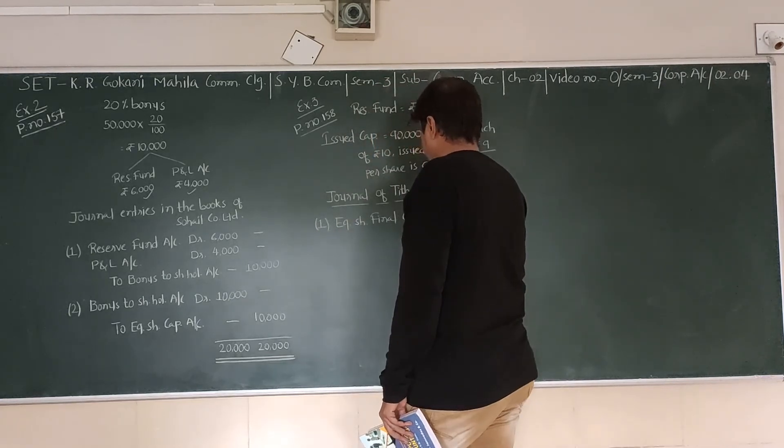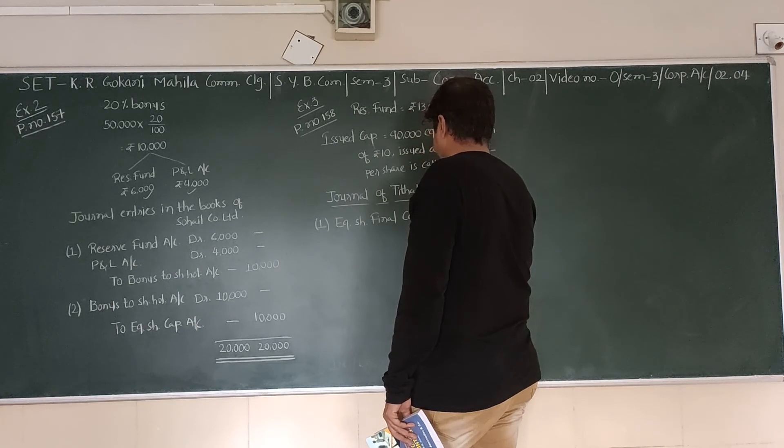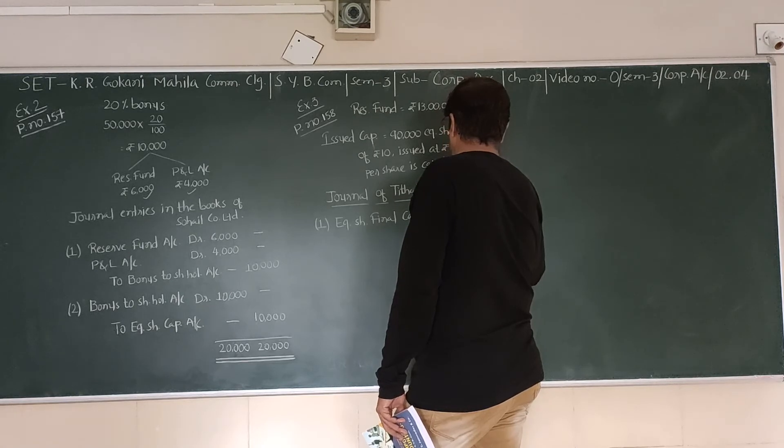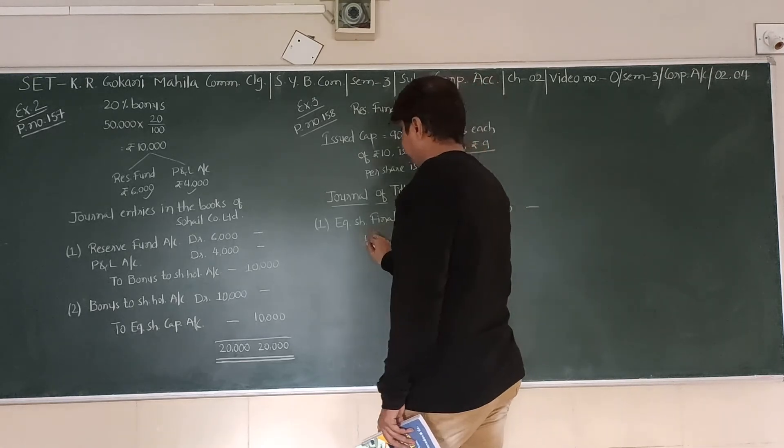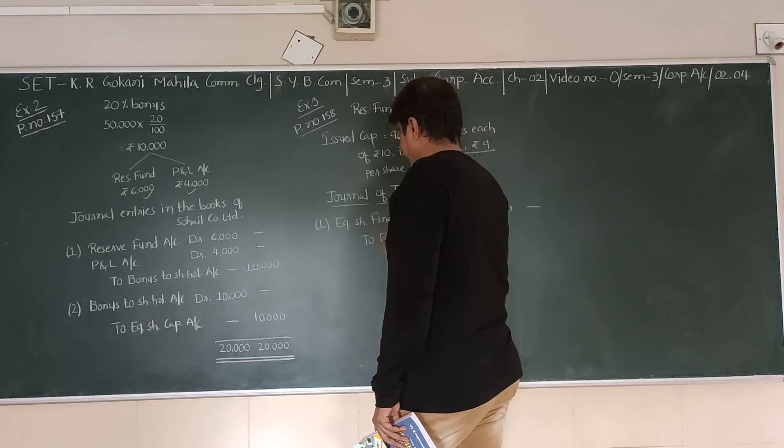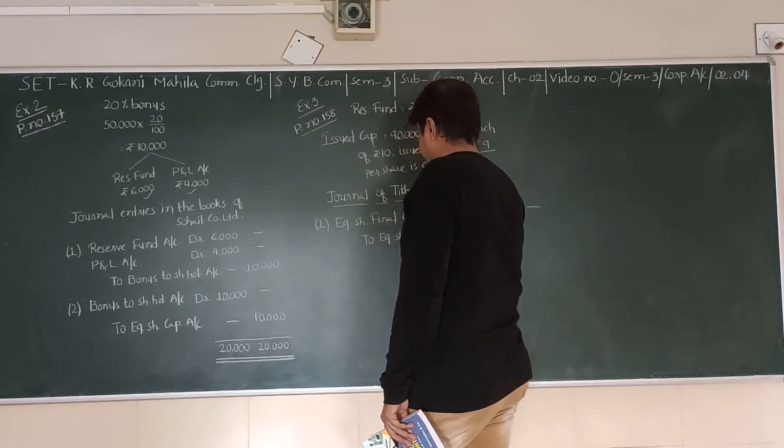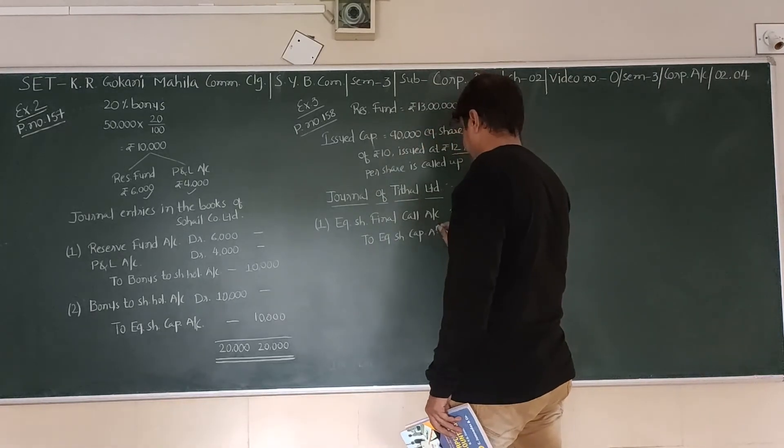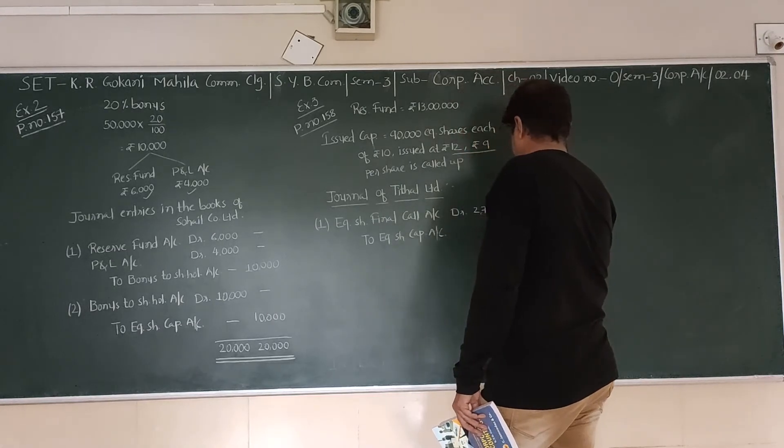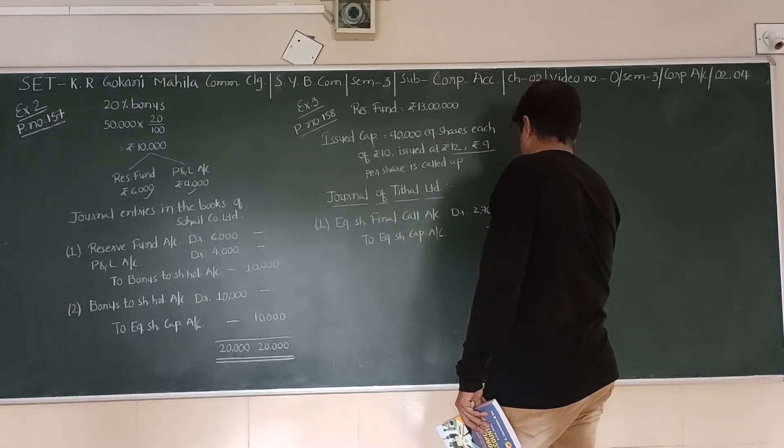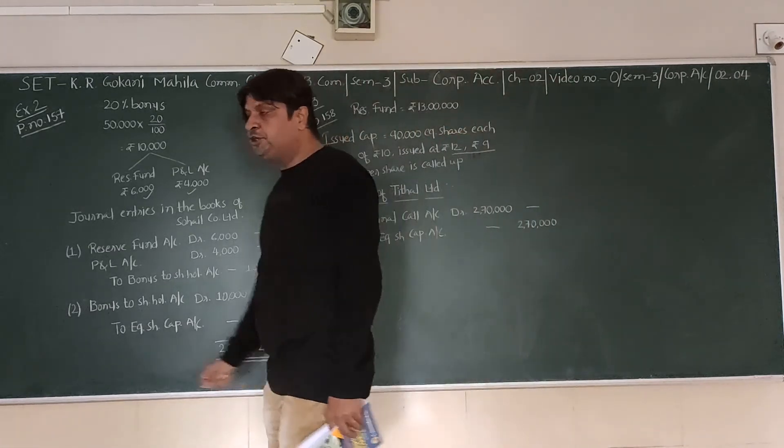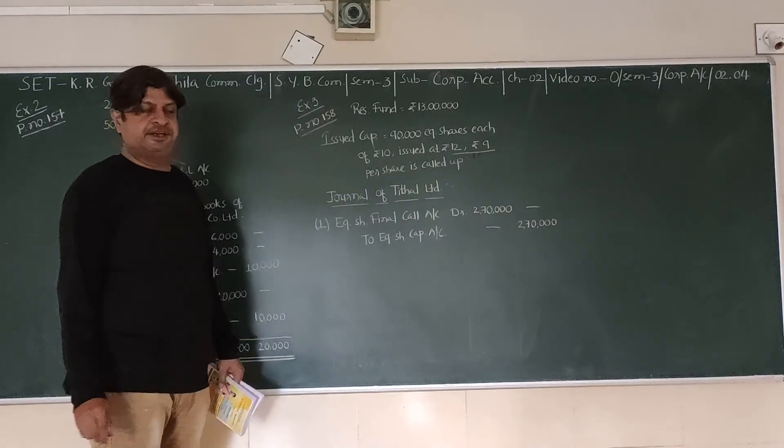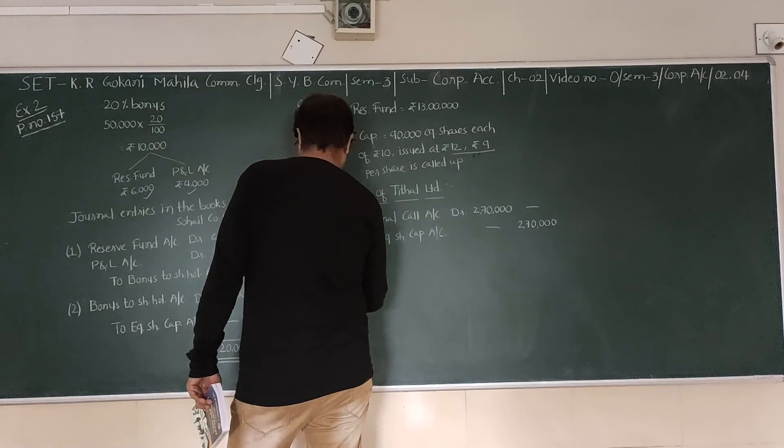Equity Share Final Call account debit 90,000 into 3, which is 2,70,000 rupees, to Equity Share Capital account credit 2,70,000.